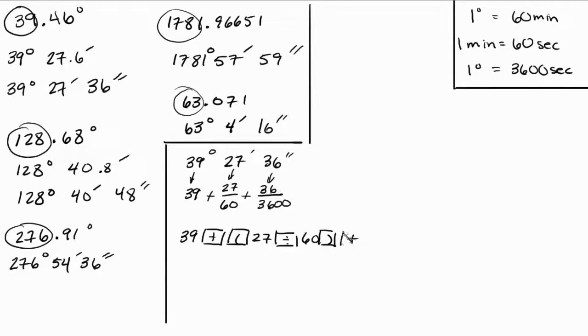So let me put the keys that I put in here. 39, then I hit the plus, and I hit open parentheses, and I just typed in 27, then the division sign, then 60, and then I close the parentheses. And then I hit plus, and then I opened up a new parentheses, and then I typed in 36, little division, 3600, close the parentheses, and then hit equal. I'm not going to do this every single time. I'm just doing it this one time, just so that way you get it. And my answer was 39.46, 39.46, and that's degrees. You see? And it worked out perfect, right?